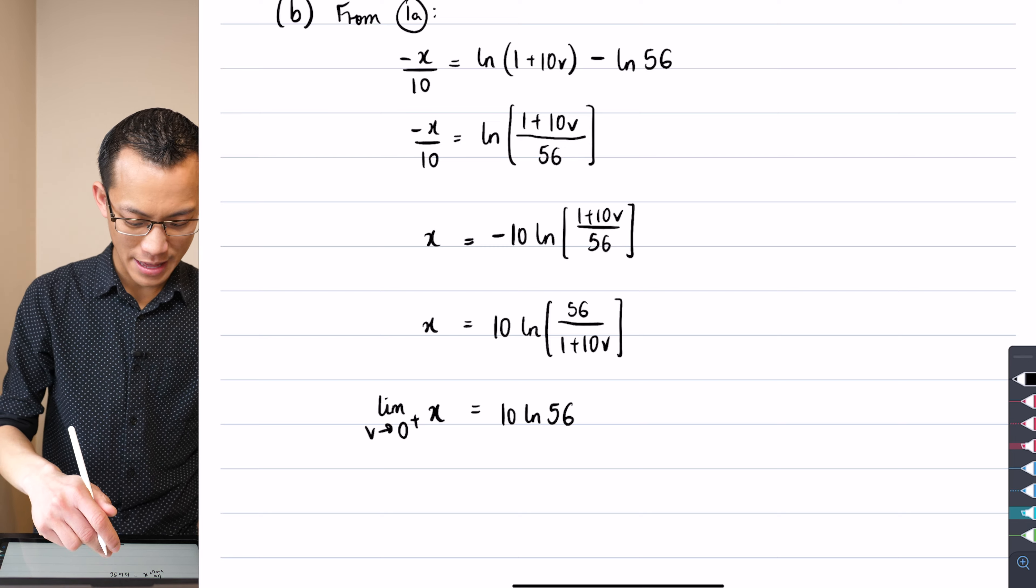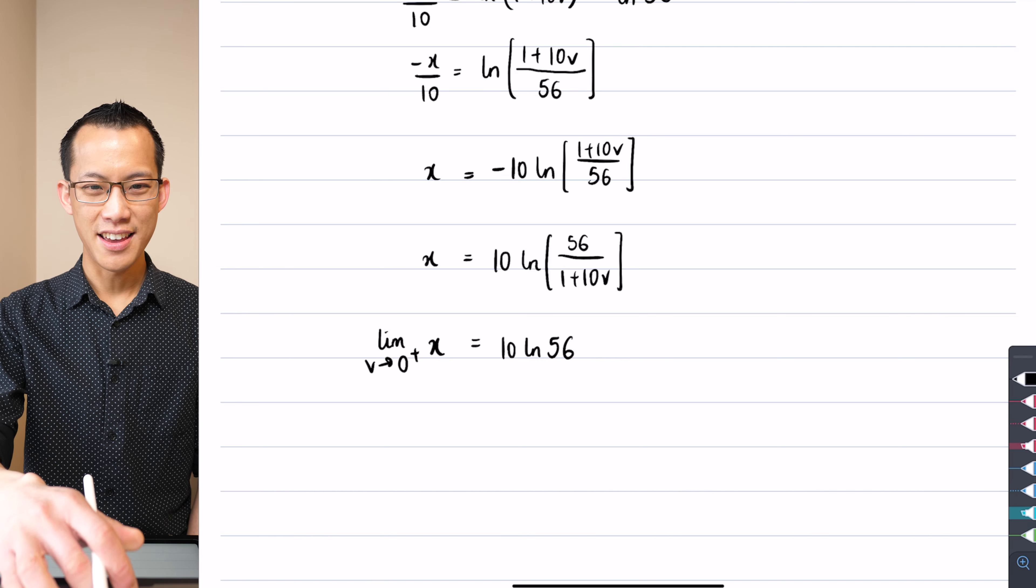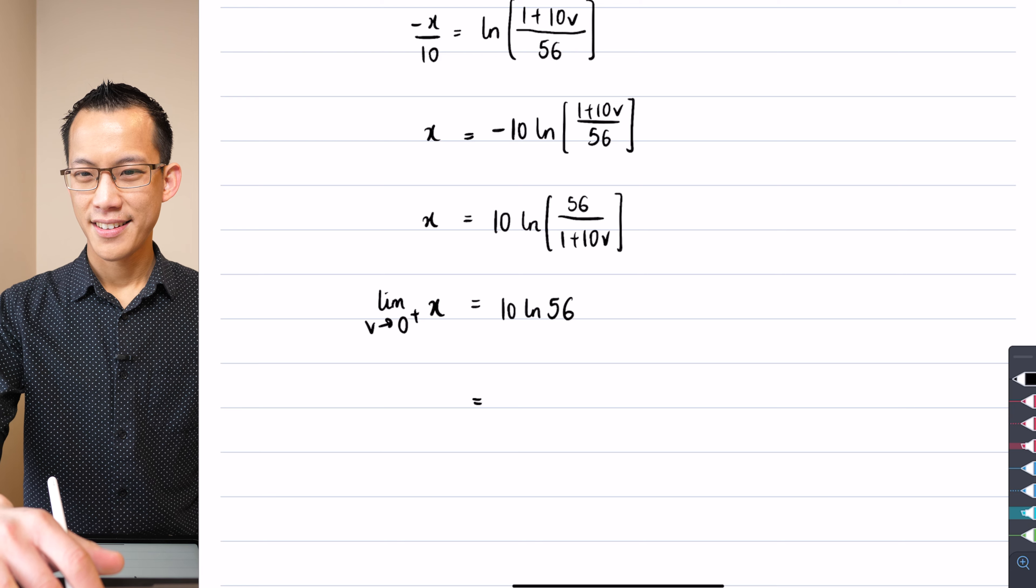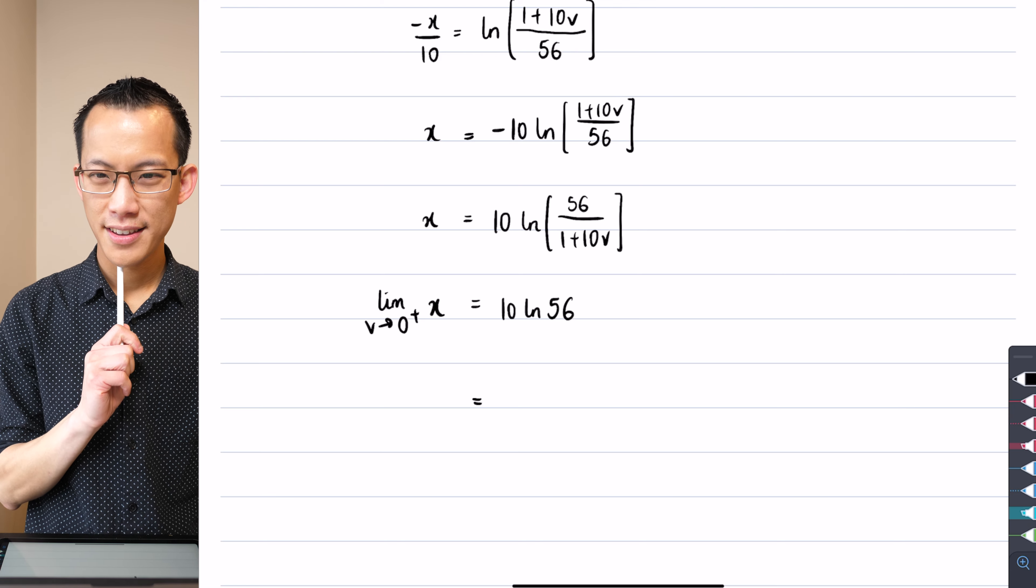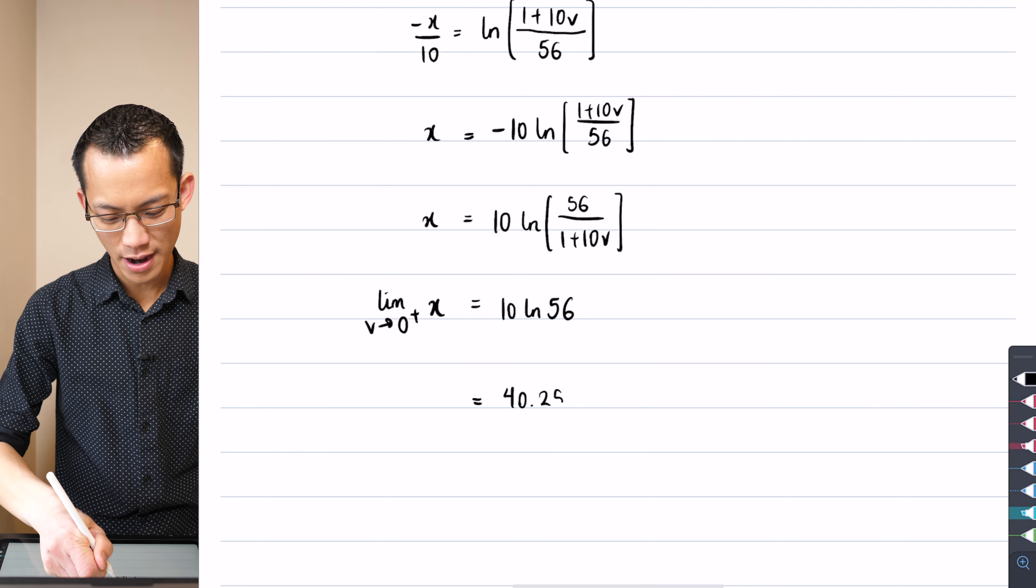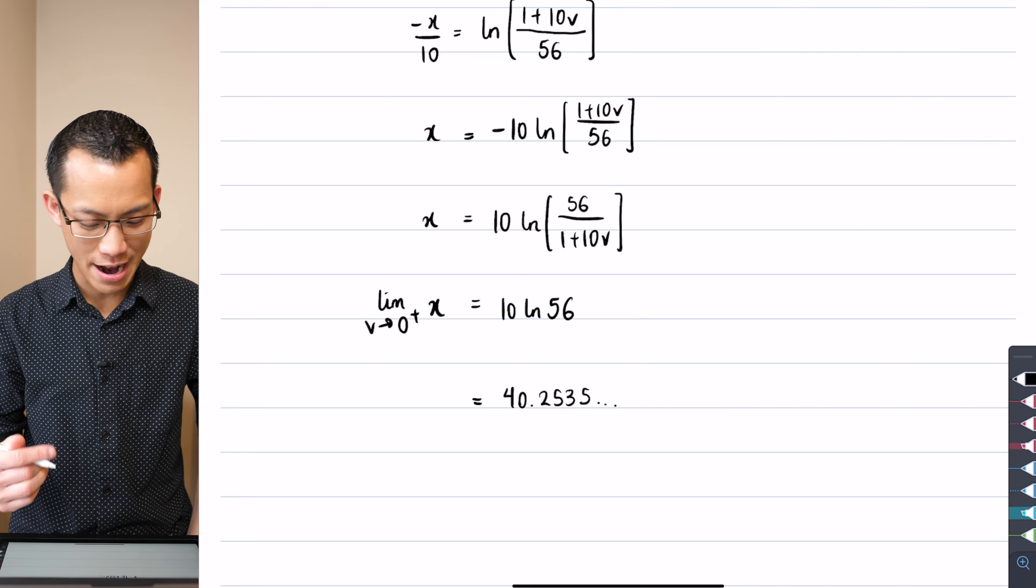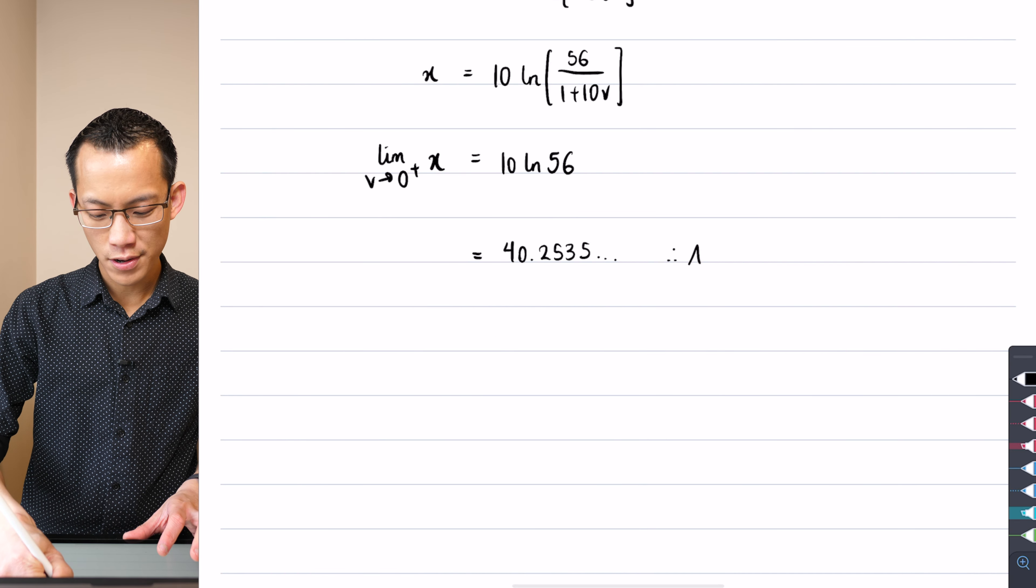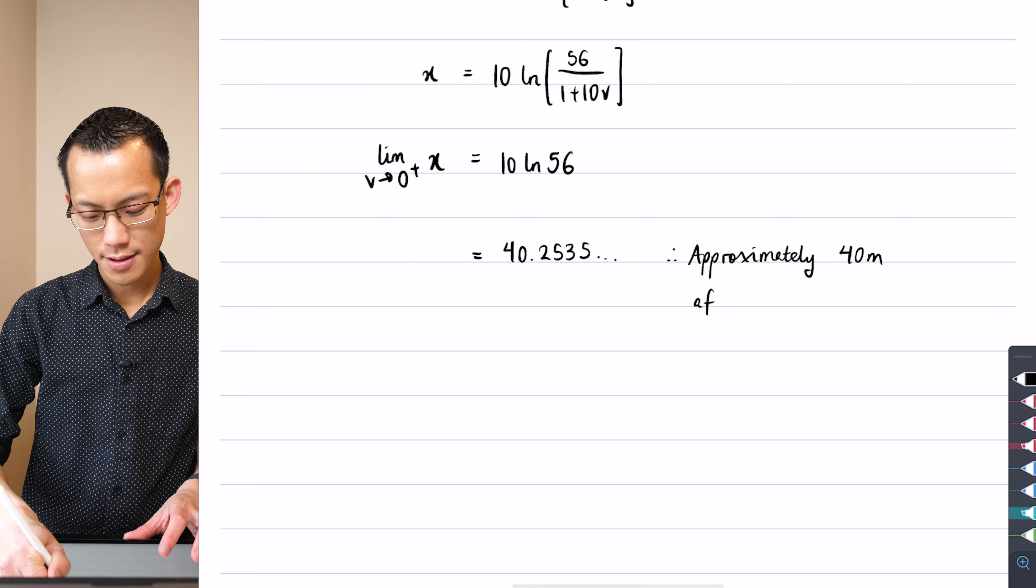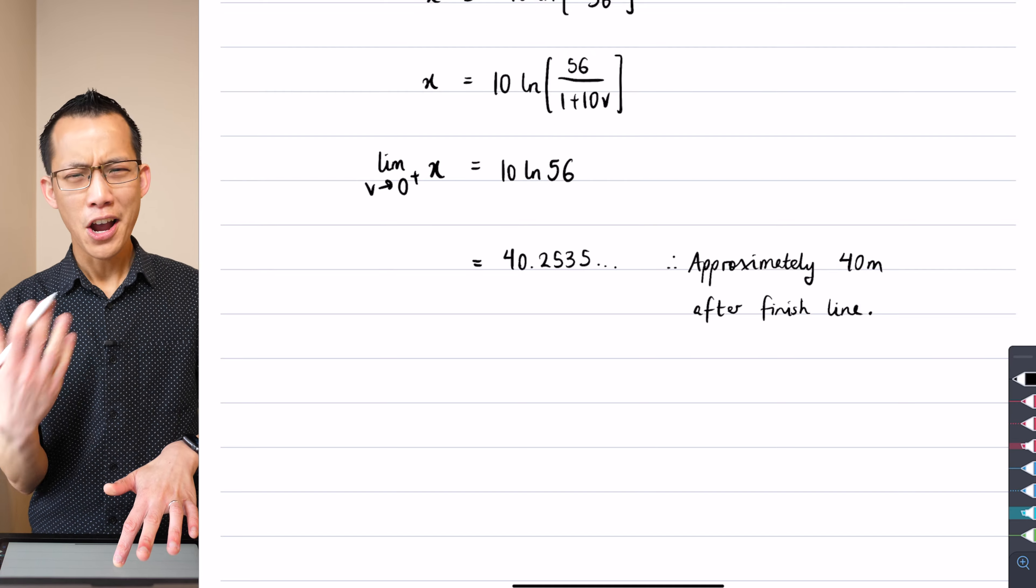Looking for some calculator work. Okay, fantastic, yeah, I got 40.2535 something or other, and the question was to the nearest meter. So as Shyam and Susie have pointed out, we can round that. So I'm going to say, therefore, approximately, the boat comes to a stop approximately 40 meters after the finish line. That's my interpretation. I'm answering a worded question with words. So I hope that makes sense to you.